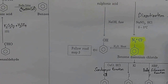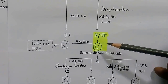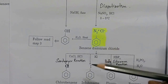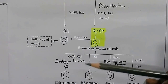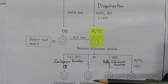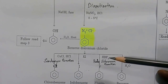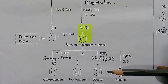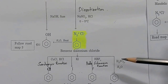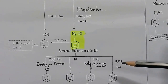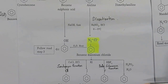Benzene diazonium chloride is one of the most important organic compounds. From benzene diazonium chloride: carrying out the Sandmeyer reaction using CuCl gives chlorobenzene; heating with KI gives iodobenzene; treating with HBF4 (fluoroboric acid) gives fluorobenzene; and treating with H3PO2 (hypophosphorous acid) gives benzene.